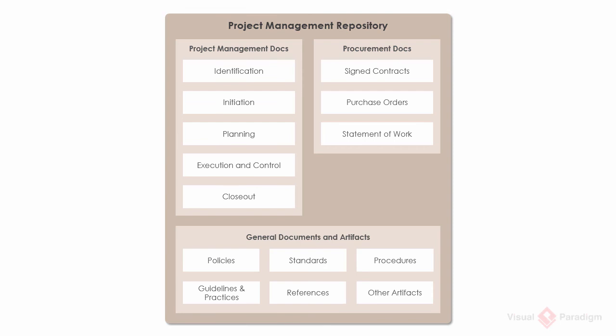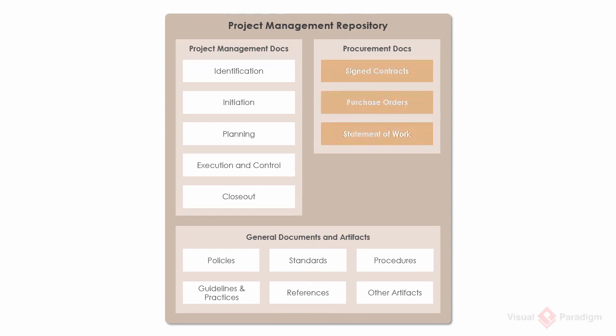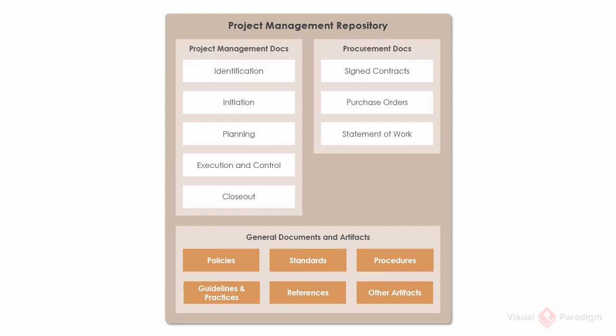For instance, there are five drawers to hold the documents produced by the five phases of the project management lifecycle. There are also drawers that store the different kinds of procurement documents such as contracts, purchase orders, and any statement of work. Resources that help the team in executing their duties may be put under drawers like policies, standards, procedures, etc.